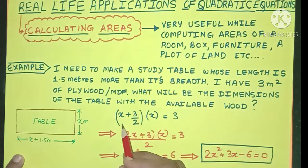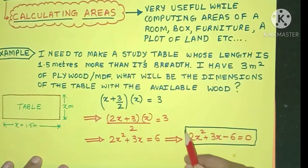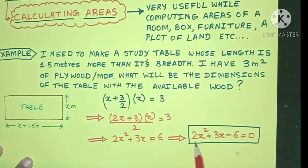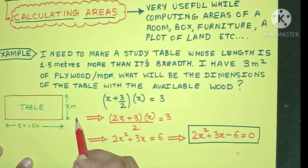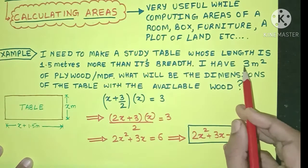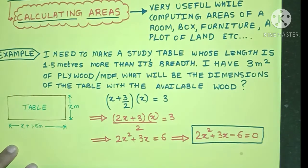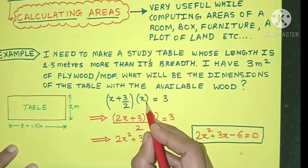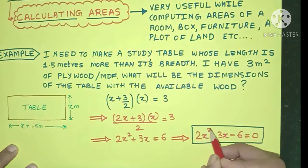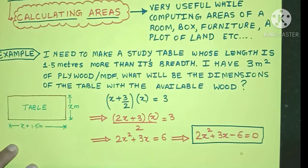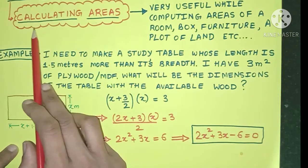Using the area of a rectangle formula, we simplify and get a quadratic equation. Solving it tells us the value of the breadth so that with 3 square meters of wood we can create the table with the length 1.5 meters more than the breadth. In situations where a variable is multiplied by itself, quadratic equations always come into play. They are very useful in calculating areas.